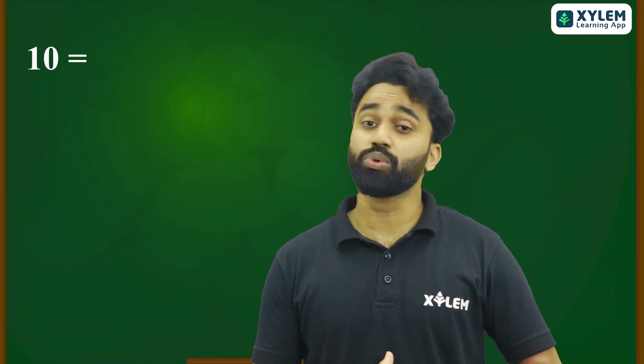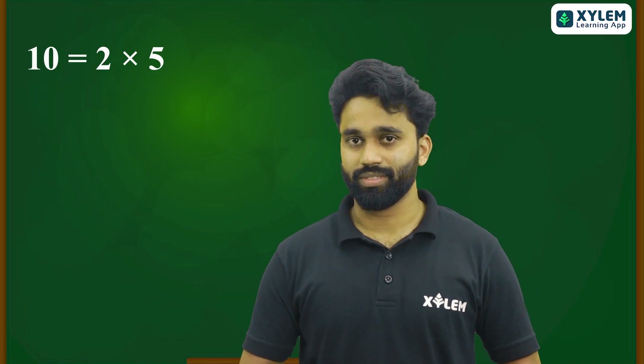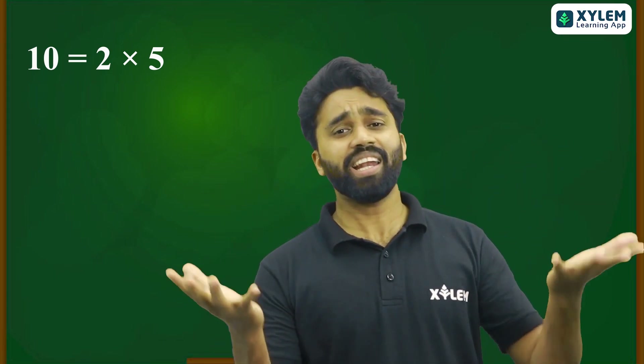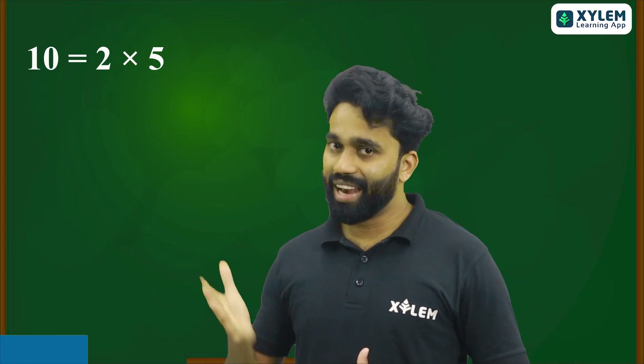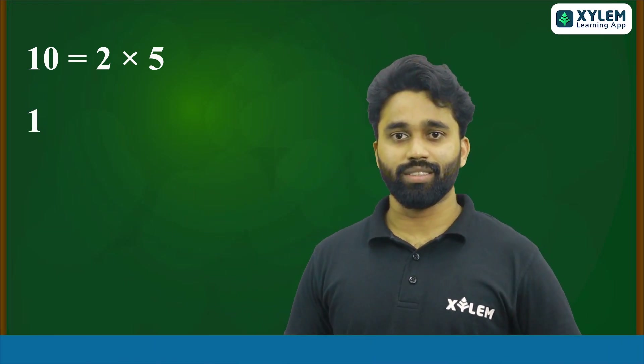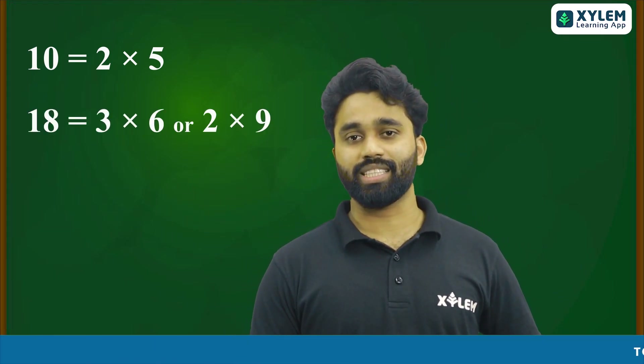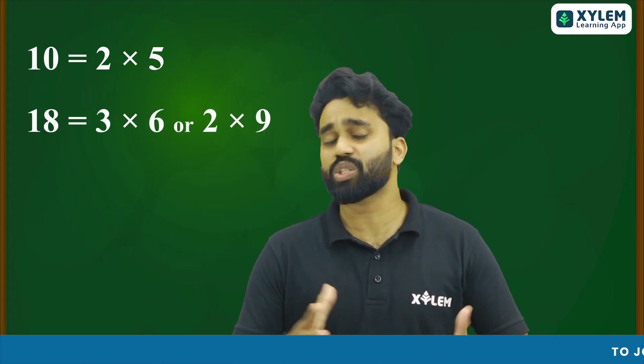For example, when you take the number 10, it equals 2 into 5 — and 2 and 5 are prime numbers. When you take another number like 18, it could be written as 3 into 6, or 2 into 9.